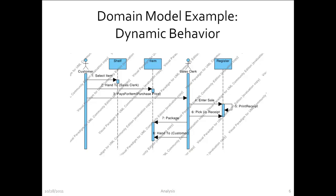Here is part of a domain model showing dynamic behavior — specifically the process by which a customer buys an item and the store makes a sale. Some classes overlap with the static object model from the previous slide, while others do not, because the class model was derived separately from the sequence diagram. This is done deliberately so that errors can be caught by comparing the two models. If one were derived from the other, we wouldn't have this validation opportunity.